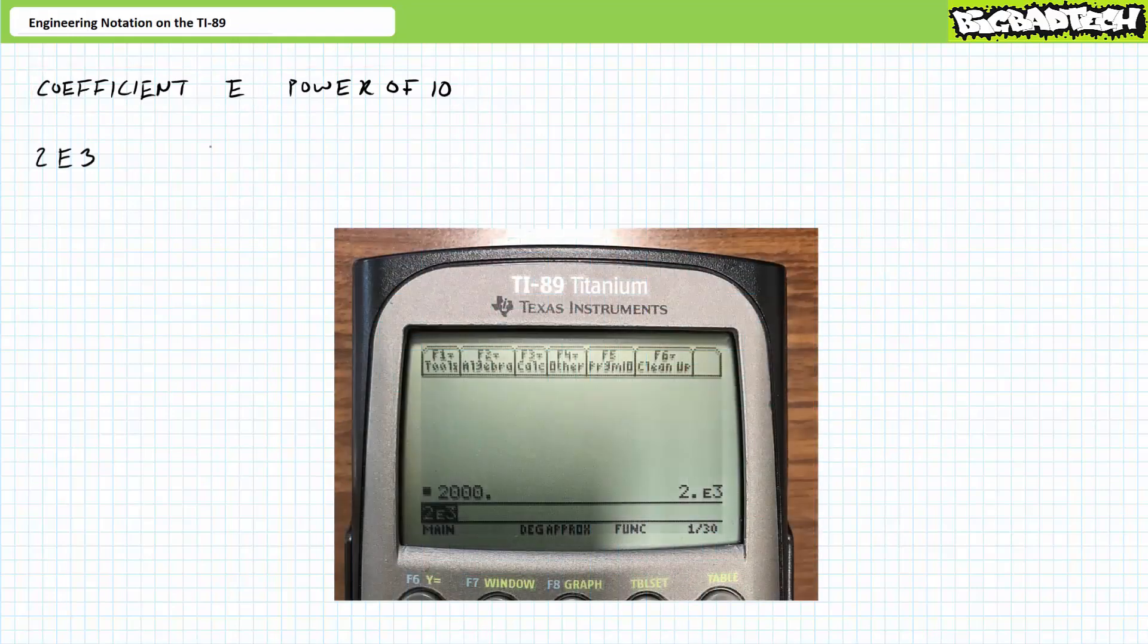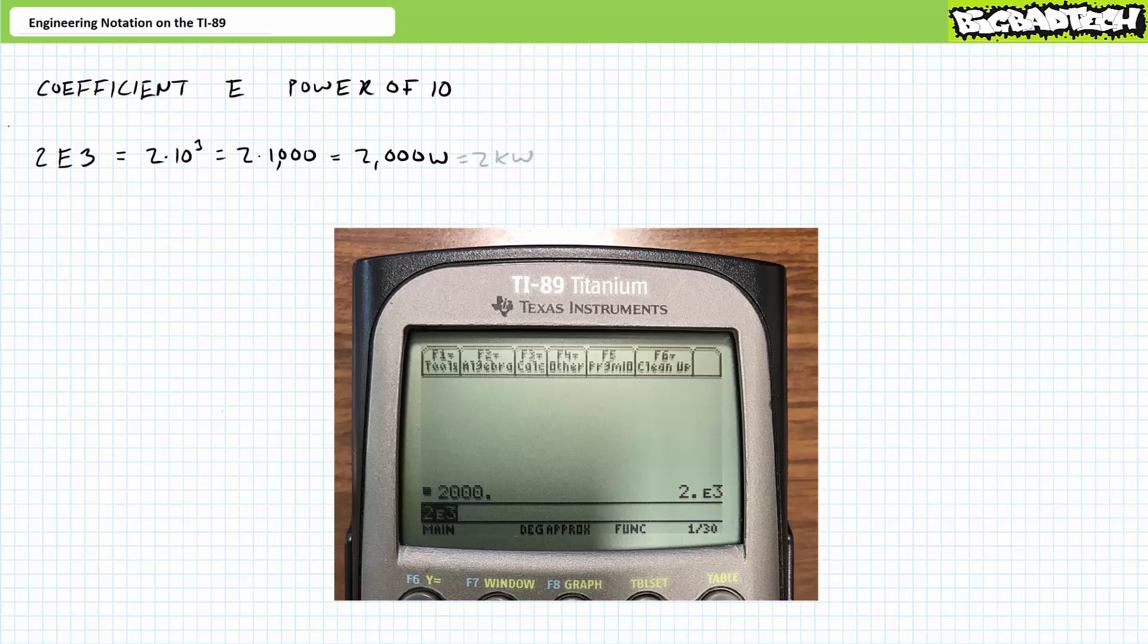If the calculator is displaying 2E3, it means take the coefficient of 2 and multiply it by 10 raised to the third power, where 10 to the third power is 1,000. Two times 1,000 is 2,000. If this number represented a quantity of power, units of watts, this would be 2,000 watts. Or using engineering prefixes, 2 kilowatts.